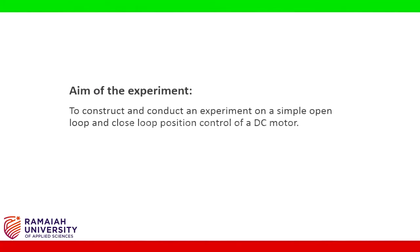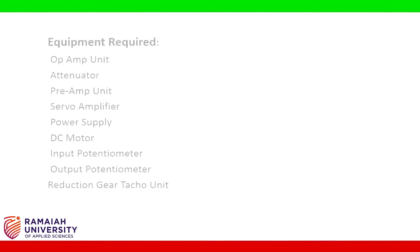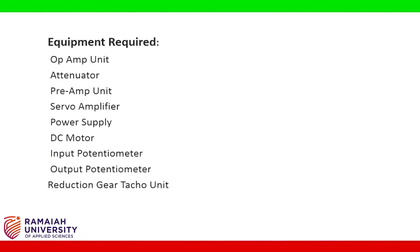The aim of the experiment is to construct and conduct an experiment on a simple open loop and closed loop position control of a DC motor. The equipment required are op-amp unit, attenuator, pre-amp unit, servo amplifier, power supply, DC motor, input potentiometer, output potentiometer, and reduction gear tacho unit.